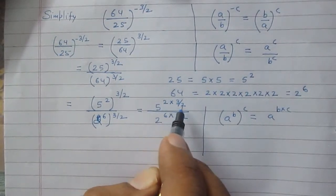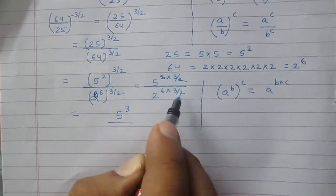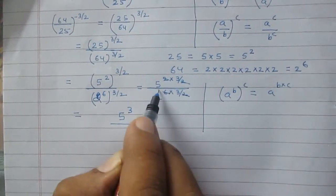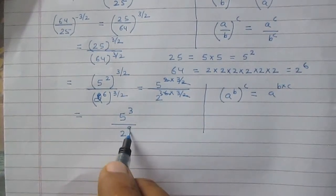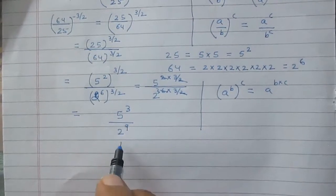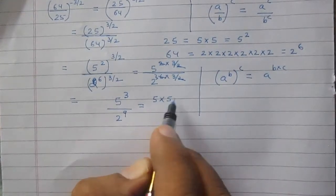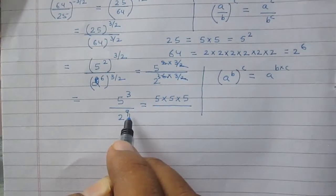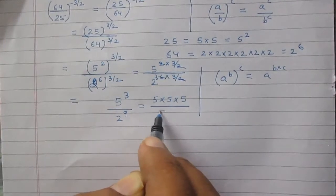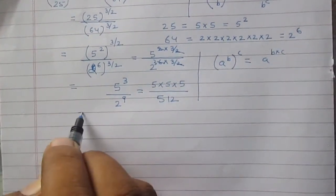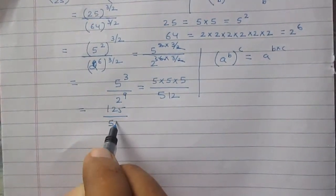2 multiplied by 3 by 2 equals 3, so the numerator is 5 raised to power 3. For the denominator, 6 multiplied by 3 by 2 equals 9, so it is 2 raised to power 9. Now 5 raised to power 3 is 5 multiplied by 5 multiplied by 5, which equals 125. And 2 raised to power 9 is 512. So the result is 125 divided by 512.